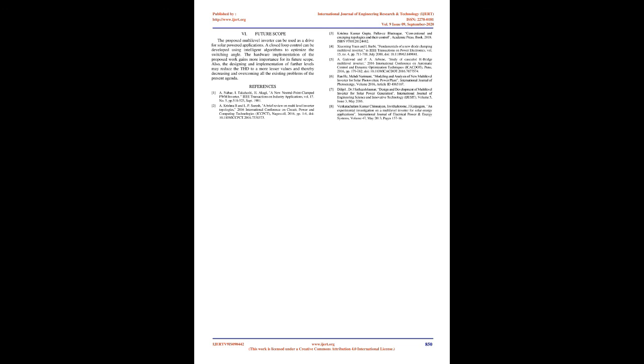A multilevel inverter with 15 levels is proposed with a reduced number of switching devices. Only seven switches are used in the proposed system, while 24 switches are required for a normal cascaded MLI with 15 levels. Asymmetrical configuration helps in obtaining higher levels with fewer voltage sources. The THD in the output voltage of this 15-level MLI could be brought to 4.71%, which is within the acceptable limit.